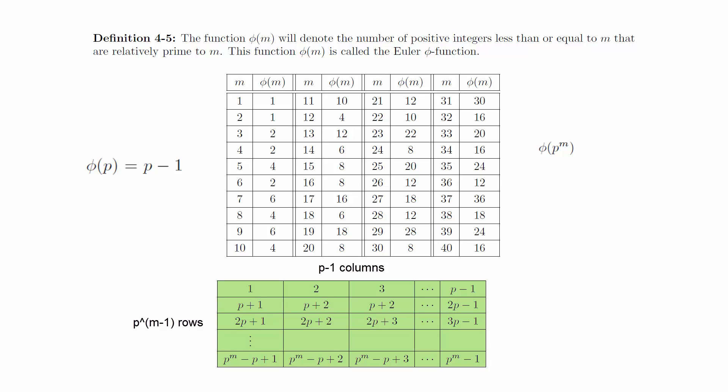This is a grid of values that's p minus 1 columns wide and p to the m minus 1 rows tall. This means that we can count the total number of values in the grid by multiplication.